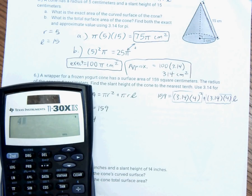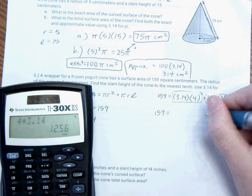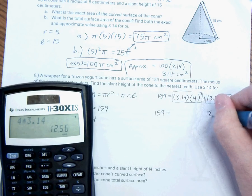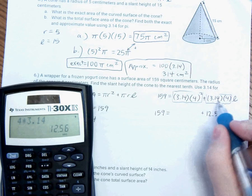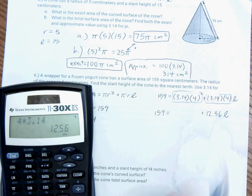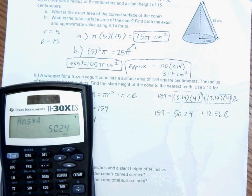So, step one, when I'm solving an equation like this, is I want to figure out what this number is. I want to figure out what this number is. So, I'm going to do 4 times 3.14, and I get... So, 159 is equal to 12.56 L plus... So, that was this one right here, and since it's 4 squared, I'm going to multiply that number times 4, 50.24. So, this is equal to 50.24. 3.14 times 4 is 12.56, and I still have my L.